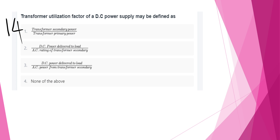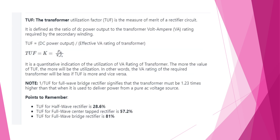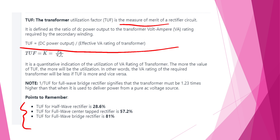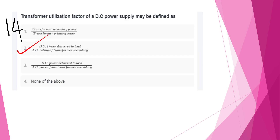The transformer utilization factor (TUF) of a DC power supply is DC power delivered to the load divided by AC rating of the transformer secondary. TUF values: half-wave = 28.6%, full-wave center-tap = 57.2%, full-wave bridge = 81%.